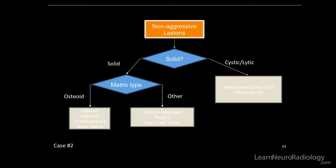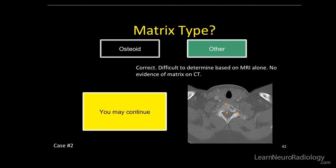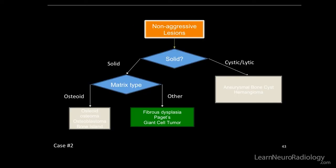Any matrix on this case? No, I don't really see any classic ring and arc matrix or osteoid matrix. So this would fall into the other category, and now we have this differential: fibrous dysplasia, Paget's, and giant cell tumor.